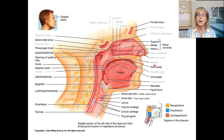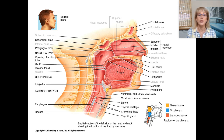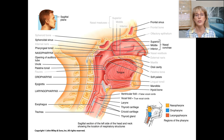So air goes in through the nostrils, swirls around, gets cleaned up, humidity is added, it gets warmed up, and then it goes to the next area: the pharynx. The pharynx starts here and goes all the way down to here, and it has three separate regions which I'll discuss on the next slide.